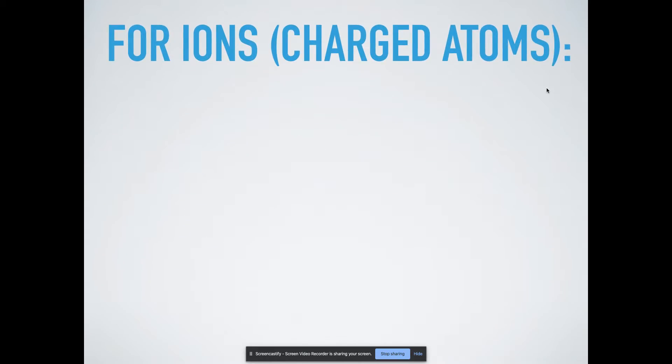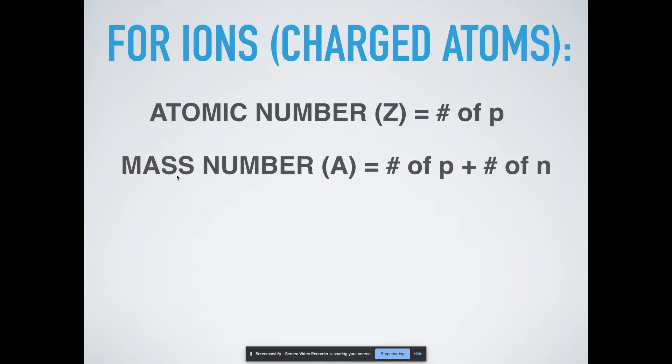Now what about for ions? So ions are charged atoms. That's just kind of what we're going to call them for now until we actually define ions later on. But ions are literally just atoms with a charge to them. So the atomic number stays the same. That's the number of protons. But notice the number of electrons is not equal anymore. Mass number is still the same, protons plus neutrons. What does change is the charge. So the charge is the number of protons minus the number of electrons.